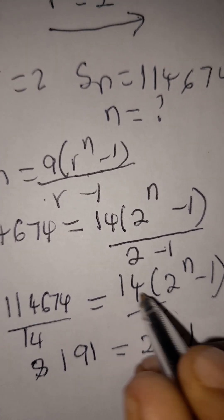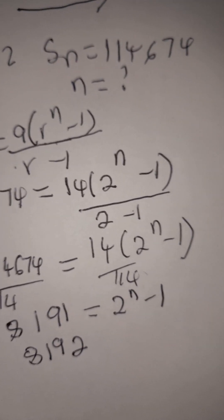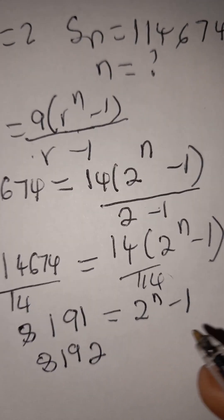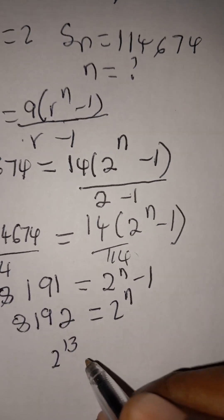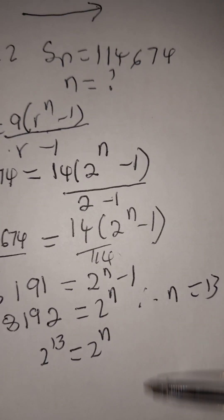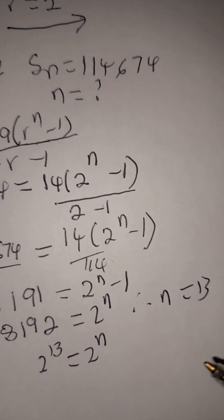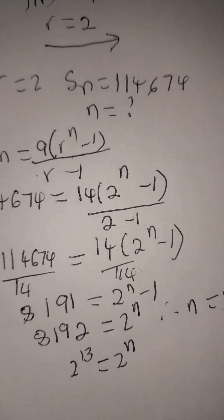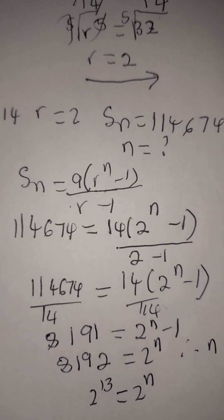From 2^n = 8192, we change this to exponential form: 8192 = 2^13... we find 8192 = 2^13, which means n = 13. Therefore 13 terms must be added to obtain the sum of 114,674. You can substitute n = 13 back to verify the answer is correct.